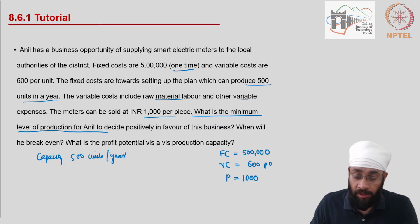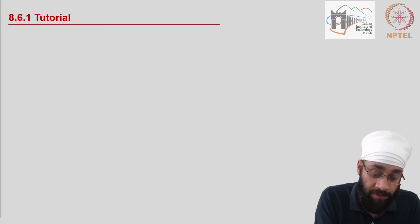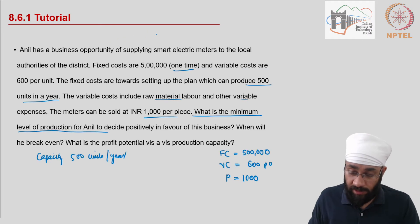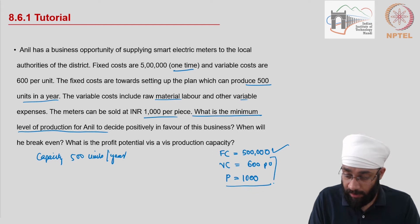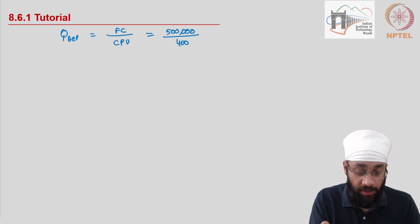We know that we have to figure out the break-even point. The quantity of break-even point is equal to fixed cost divided by contribution per unit. The fixed cost is given to be 5 lakhs divided by the contribution per unit. So contribution per unit comes out to be 1,000 minus 600, so 400 is the contribution per unit. This gives you 1,250. So you have to produce 1,250 units in order to break even.